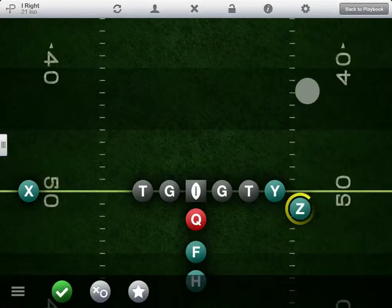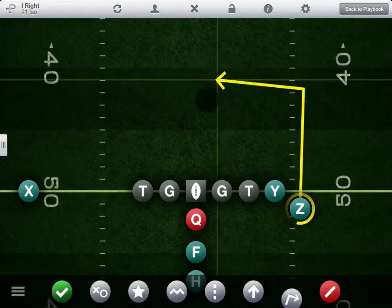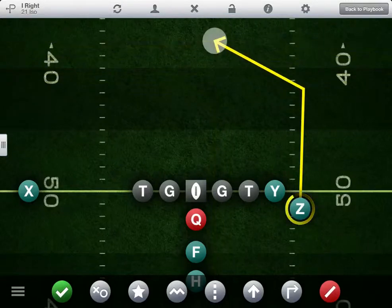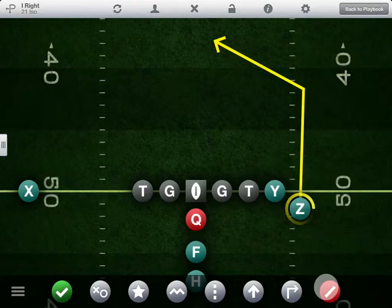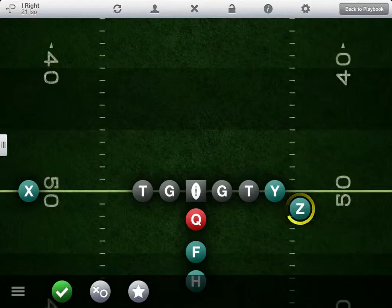Tap to select any player and then tap or tap and drag to draw an assignment. If you don't like the assignment, tap the red icon to clear it one segment at a time.